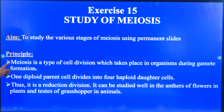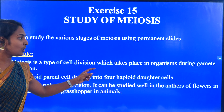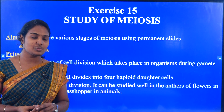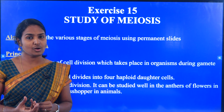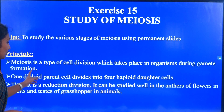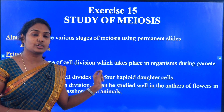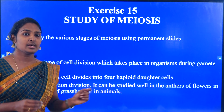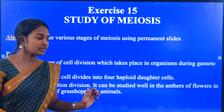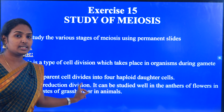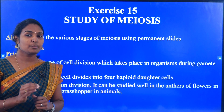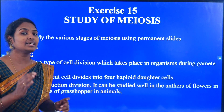So what is the principle? Meiosis is a type of cell division which takes place in all organisms during gamete formation. Gamete formation means it is the formation in the ovary or the testis. One diploid parent cell divides into four haploid daughter cells. There will be a change from diploid to haploid. Thus it is called reductional division, but in case of mitosis we call it equational division, while this we call reductional division.